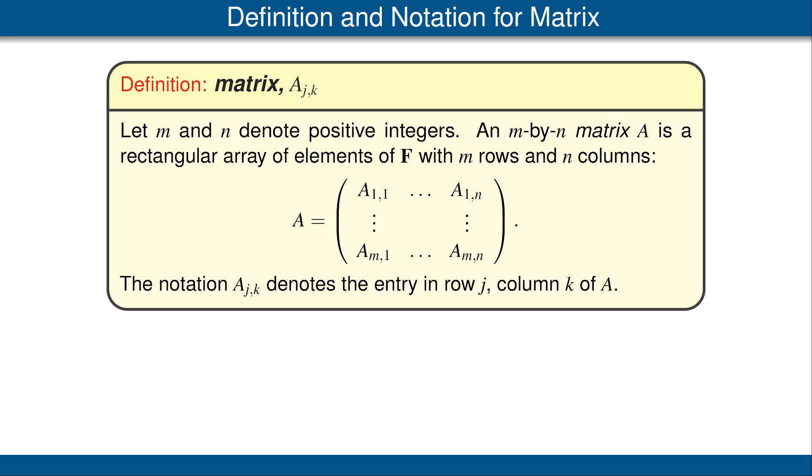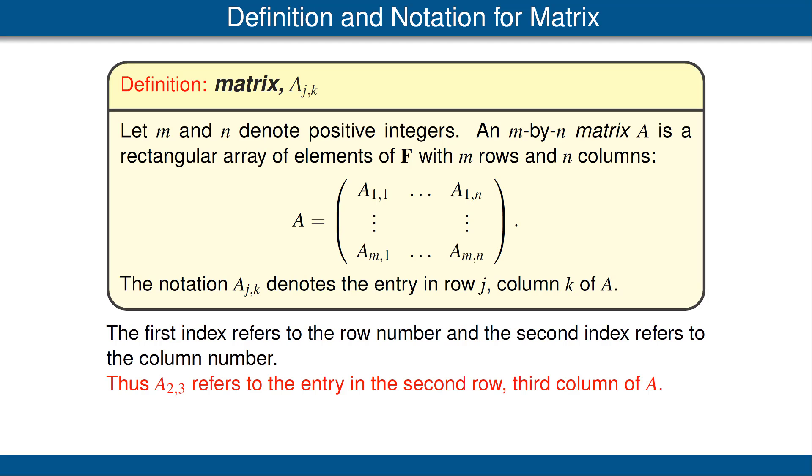The notation A sub j,k denotes the entry in row j, column k of our matrix A. Notice the notation here and compare it to the notation we use for elements of F^n. If we have a vector x in F^n, we usually denote the jth coordinate by x sub j. We do something similar with matrices. If we have a matrix A, we denote the entry in row j, column k using the same letter A and then subscript it with j,k. Remember that the first index in such a subscript always refers to the row number and the second index refers to the column number.